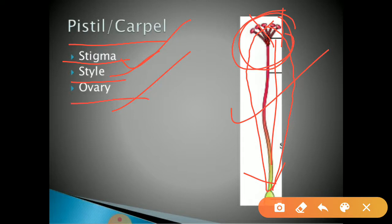Next, the last part is ovary. Ovary is the swollen basal portion of the carpel where ovules are present. It is swollen in nature and inside this ovary, ovules are present.